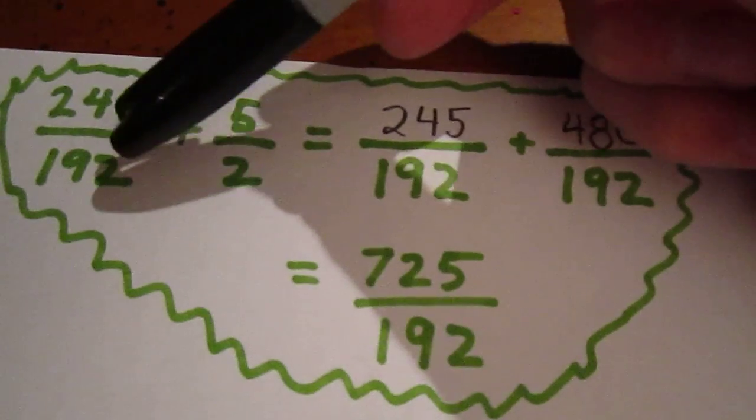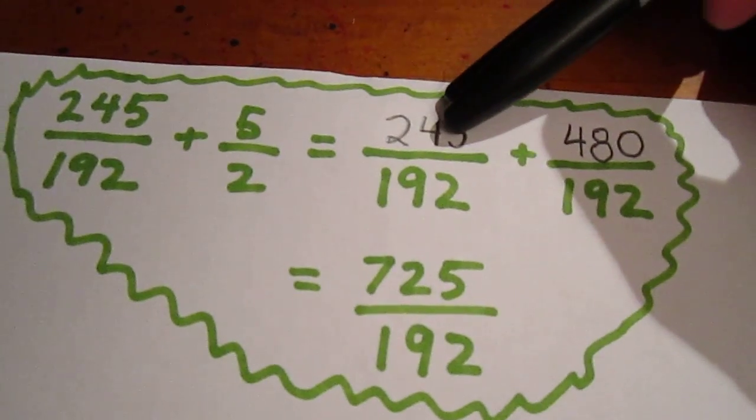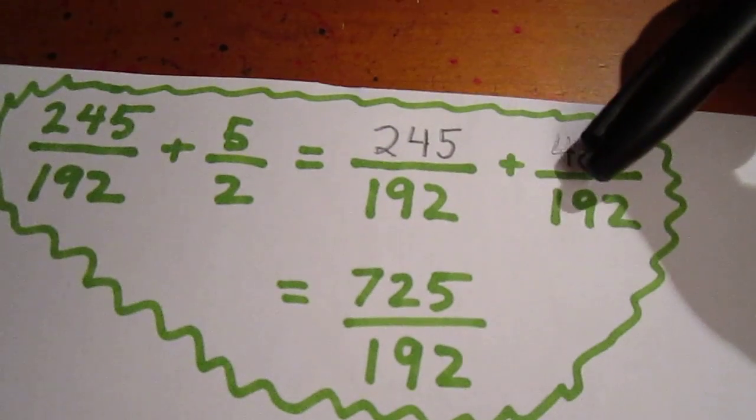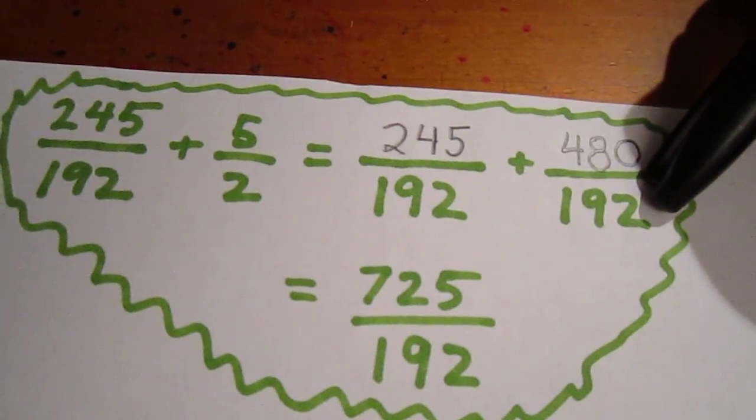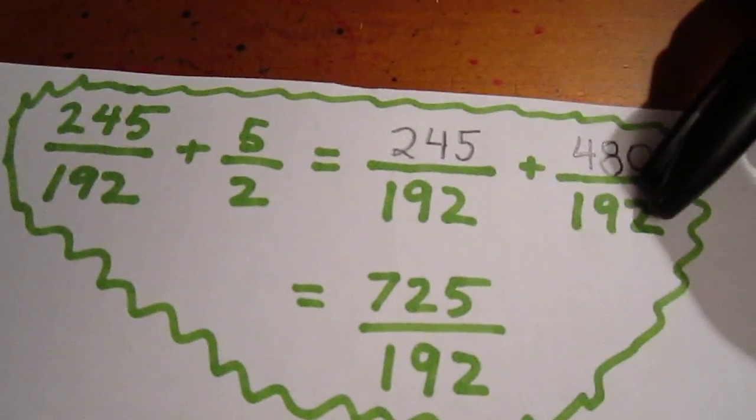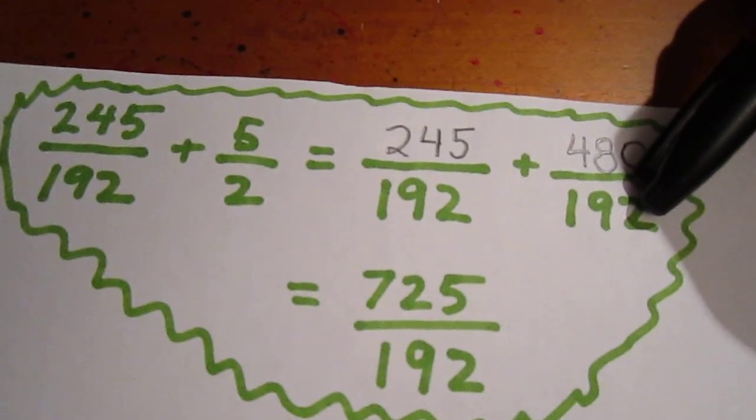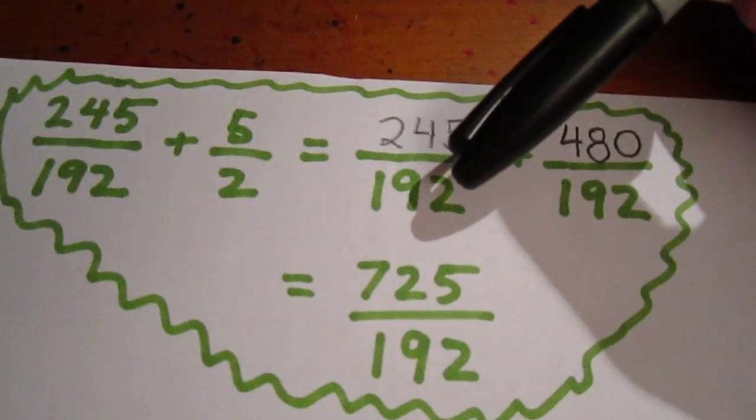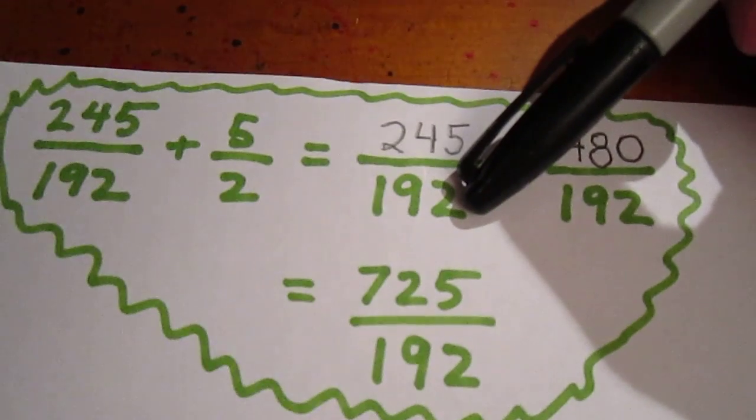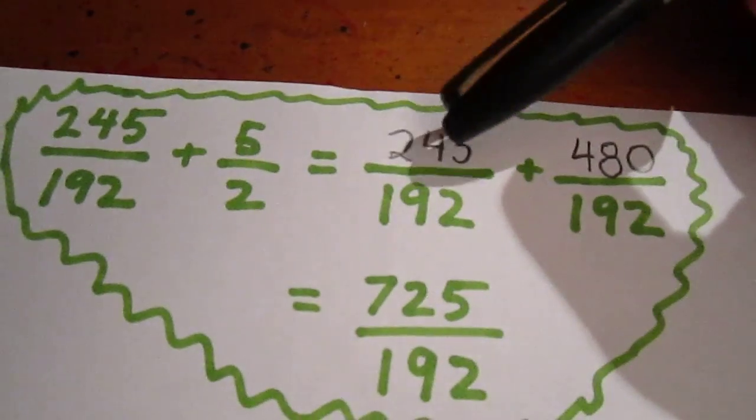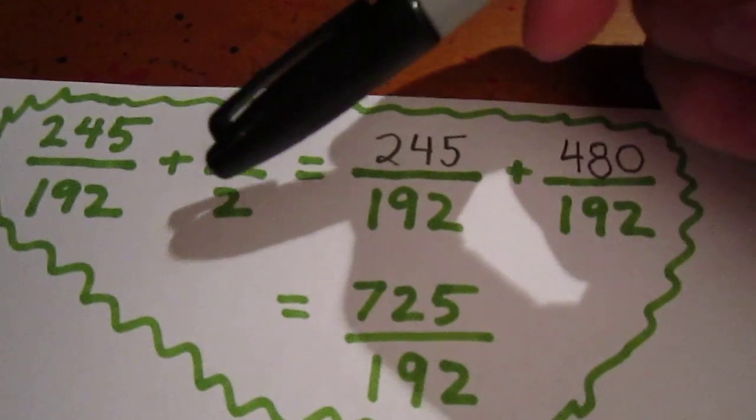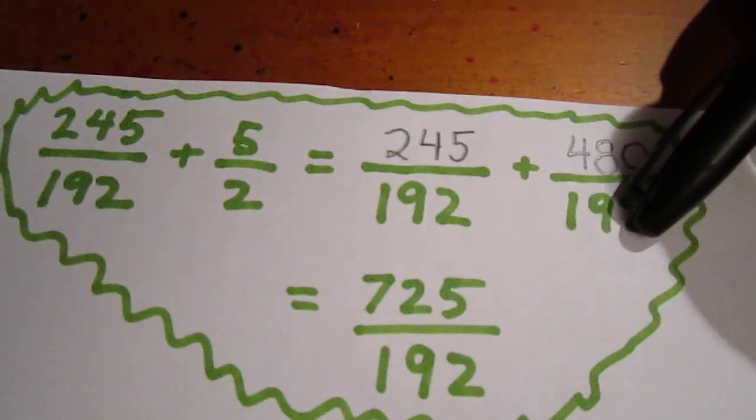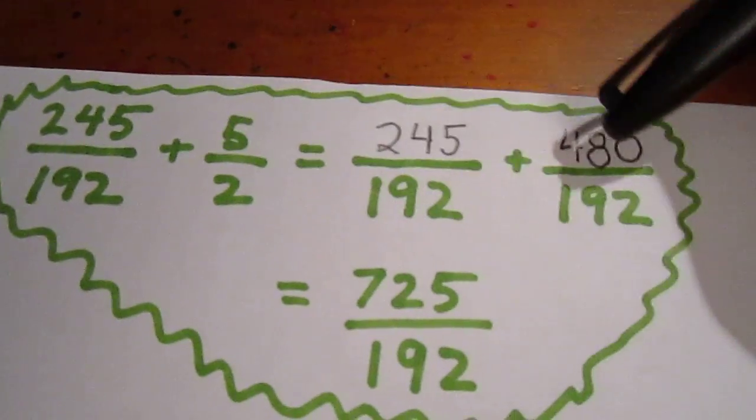Well, 245 over 192 plus 5 over 2 is the same as 245 over 192 plus. Now, at this point, I like to get my common denominator of 192 down first. I multiplied this 192 by 1 to get 192, so I multiplied 245 by 1 to get 245. I multiplied 2 by 96 to get to 192, so I multiplied 5 by 96.